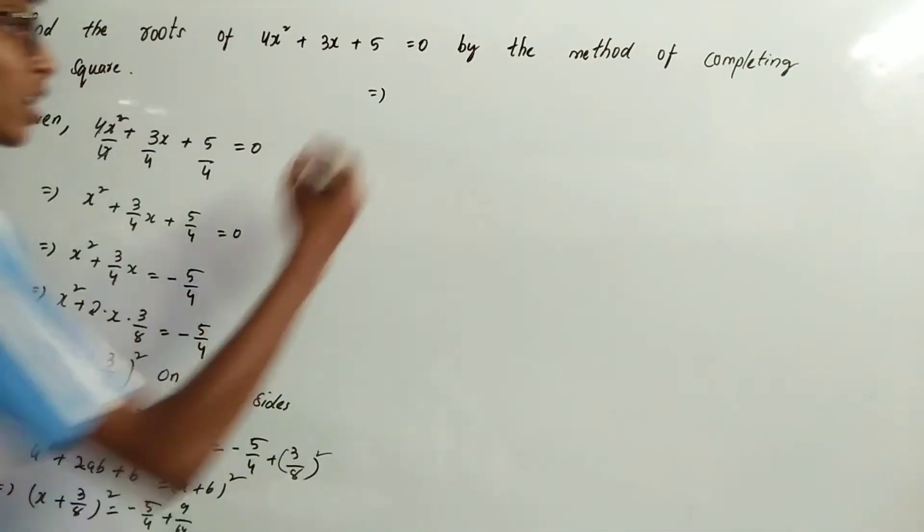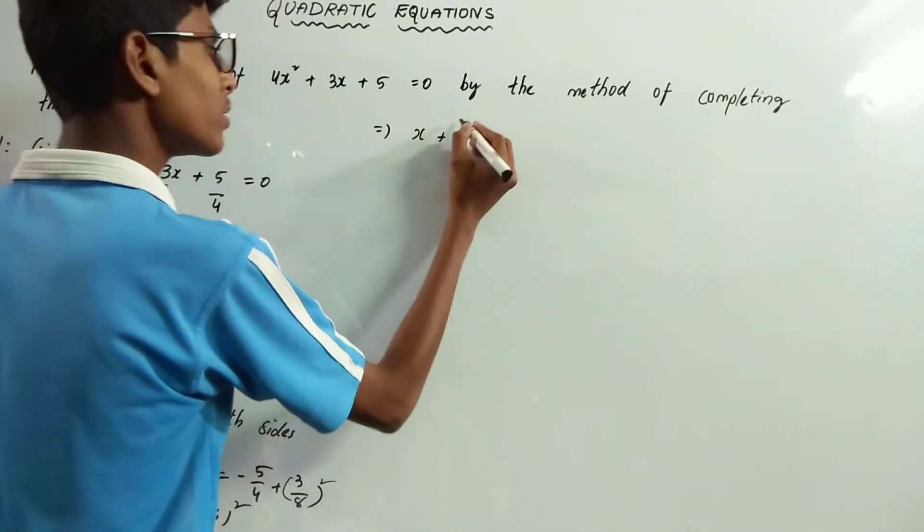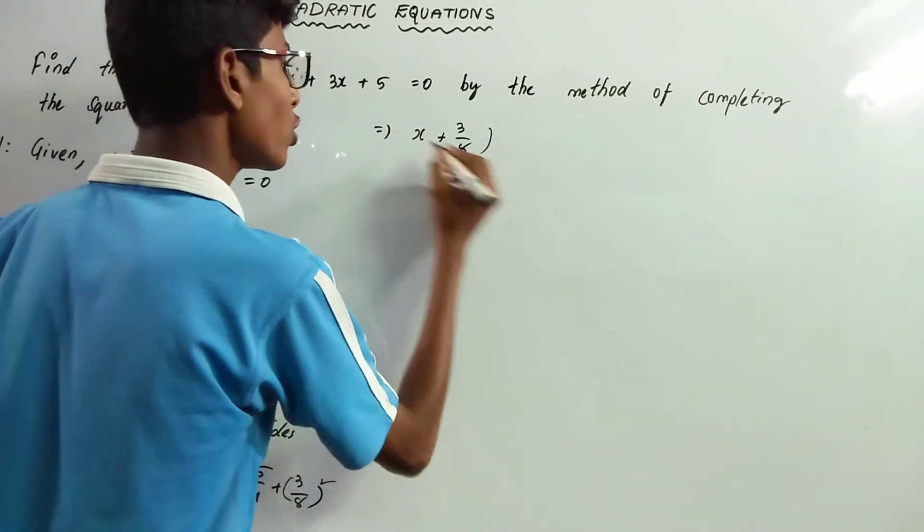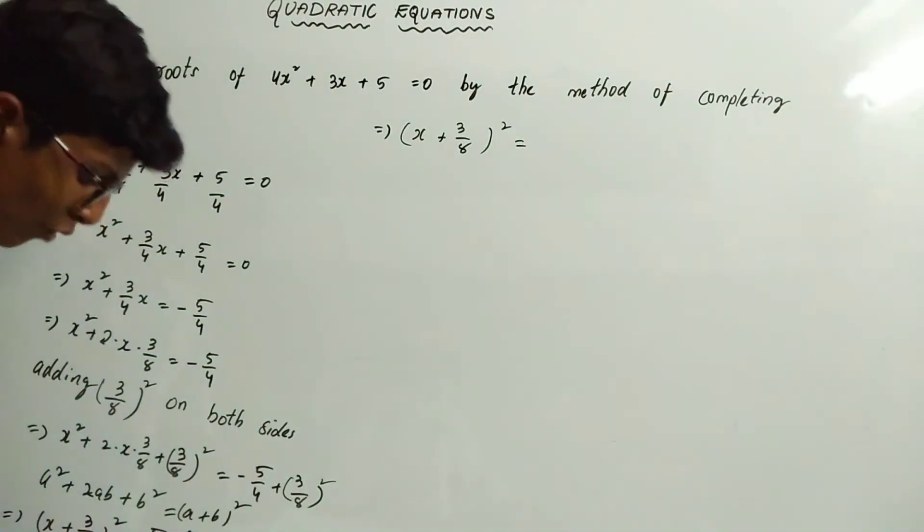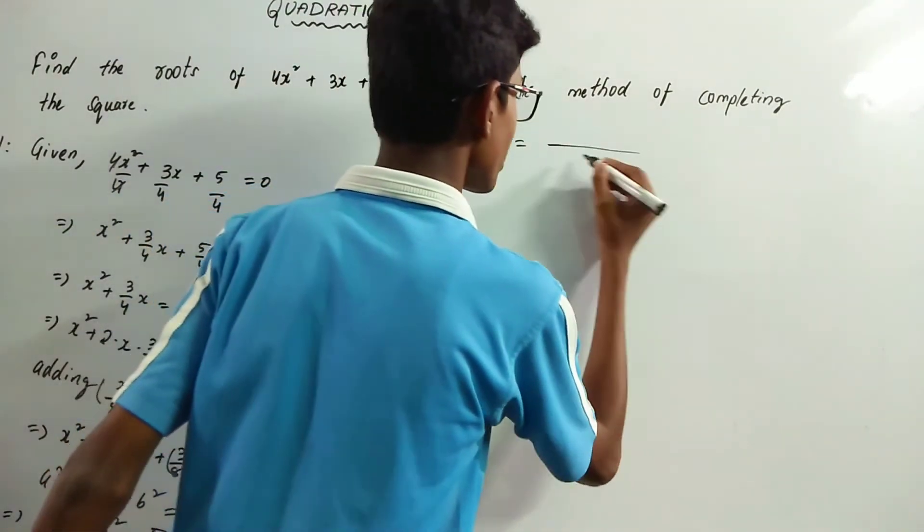That implies (x + 3/8)² equals... the LCM of 4 and 64 is 64.